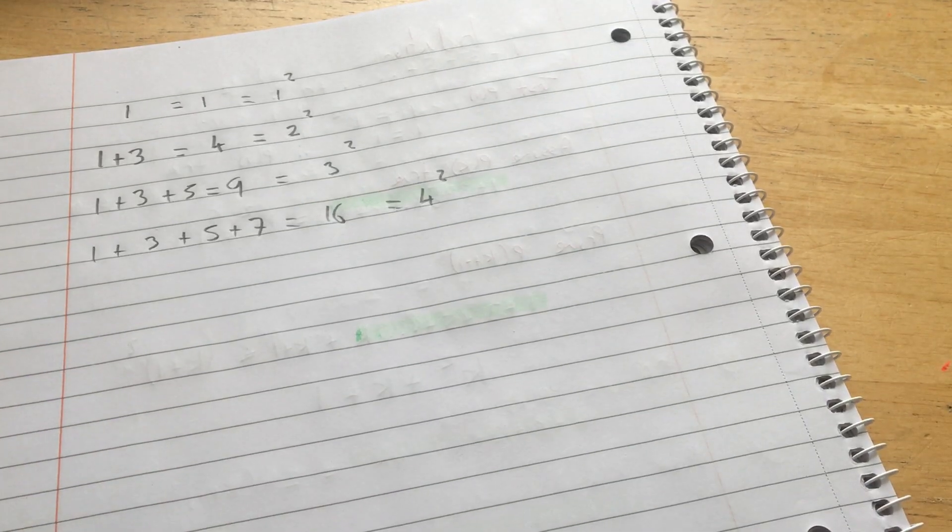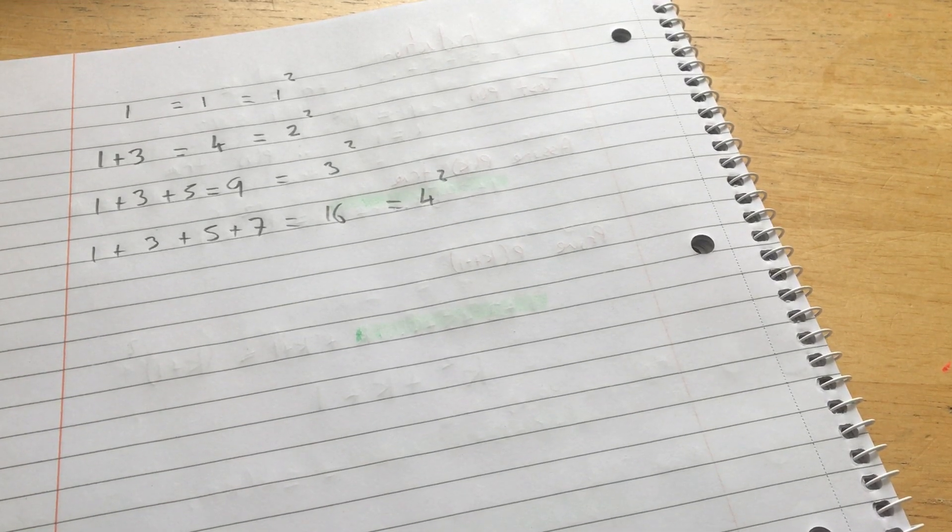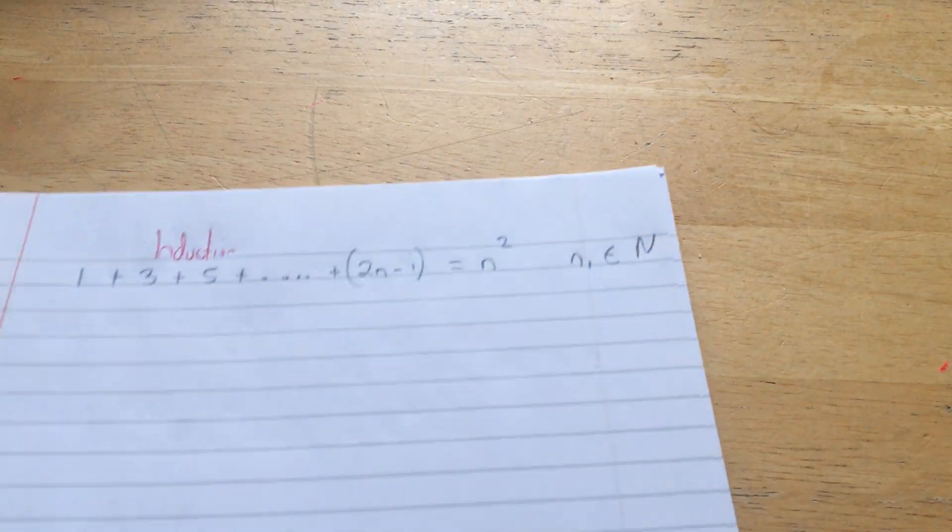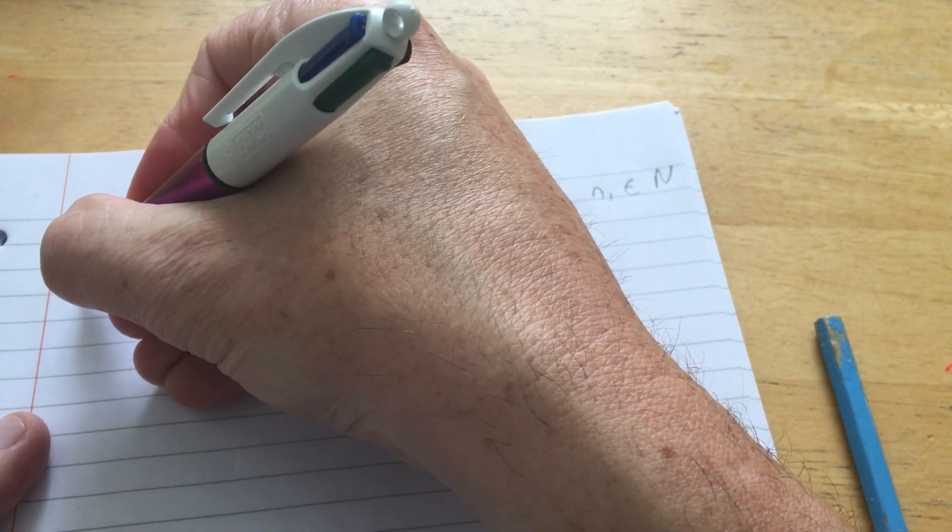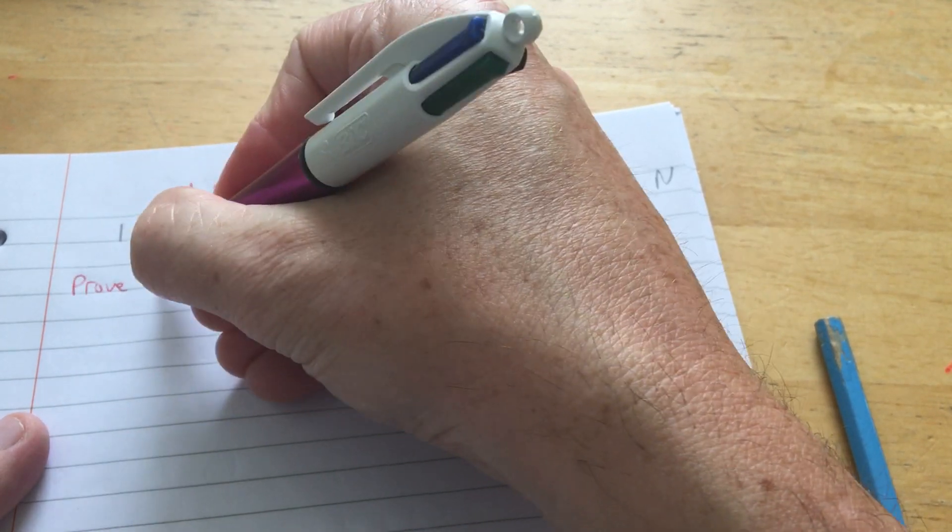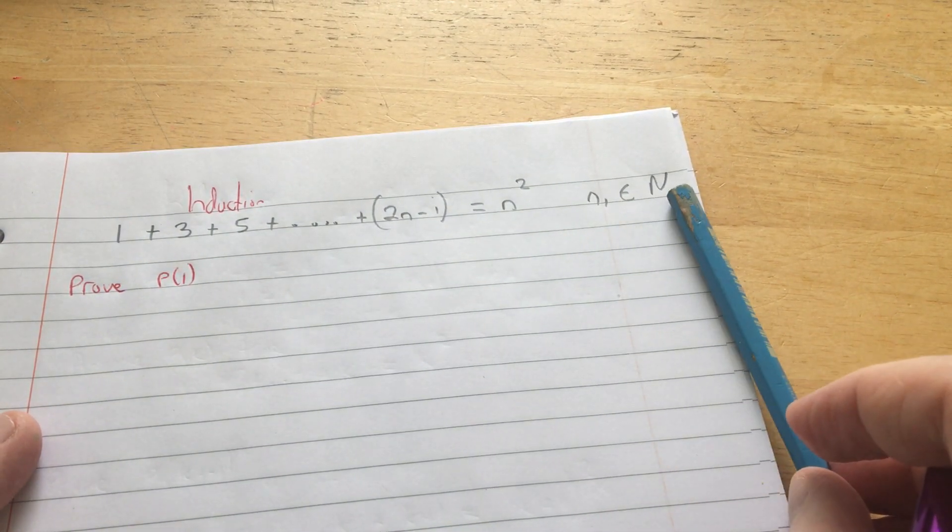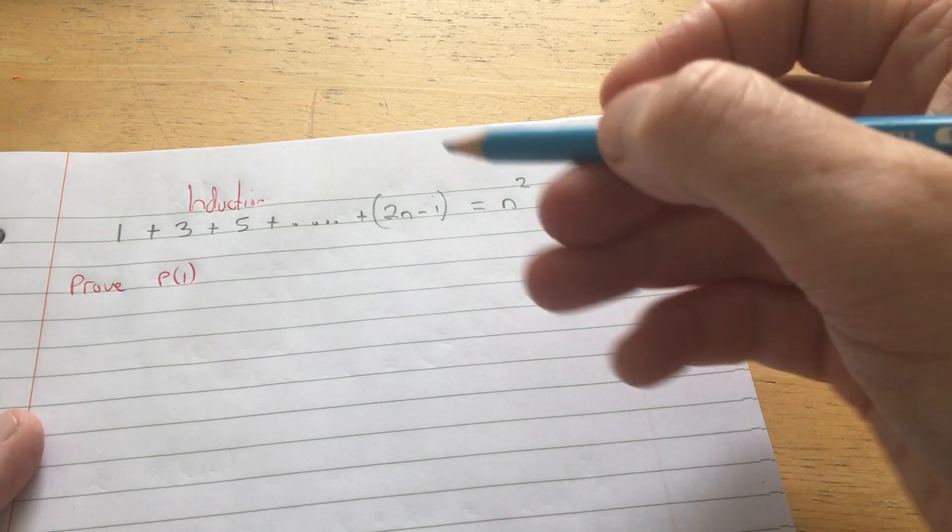So you're basically trying to prove that if you add together the first 10 odd numbers, for example, that will be the same as 10 squared. So follow the induction series. Prove the proposition is true for the lowest possible value of n. Here n is an element of the natural numbers.